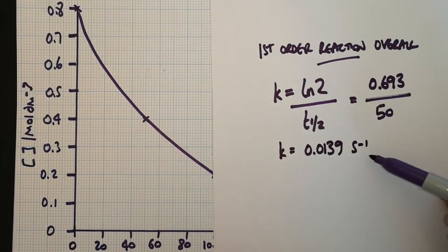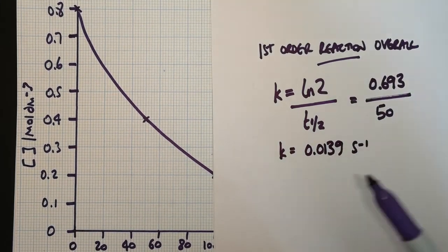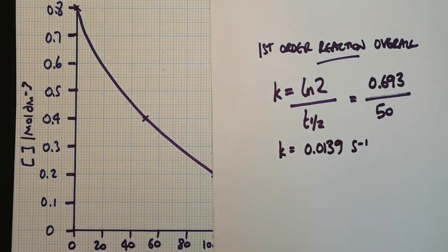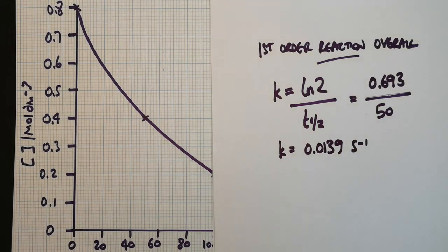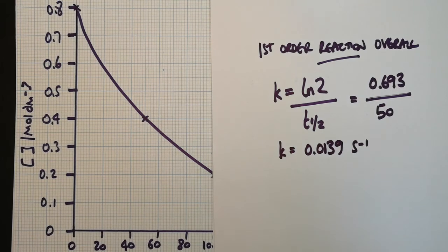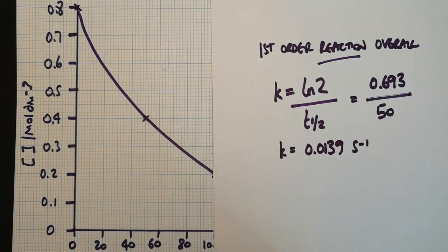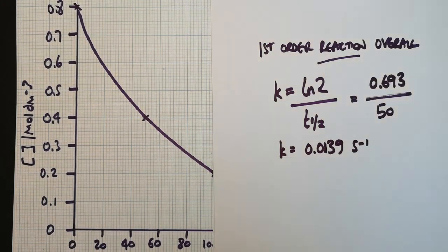It has to be seconds to the minus 1 because the overall order has to be 1 for this to work. It doesn't work if you've just got a first-order reagent and another first-order reagent. It has to be a first-order reaction overall, but it's a nice shortcut to calculate the rate constant if you're given a constant half-life and told that it's a first-order reaction.